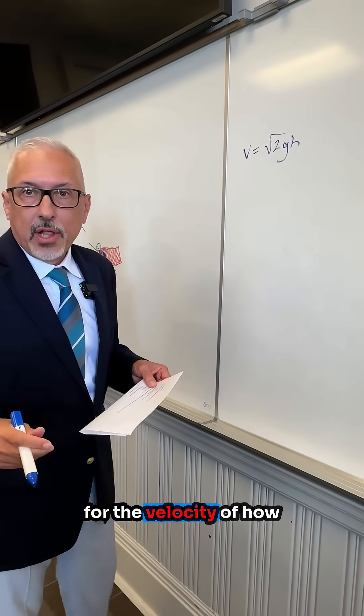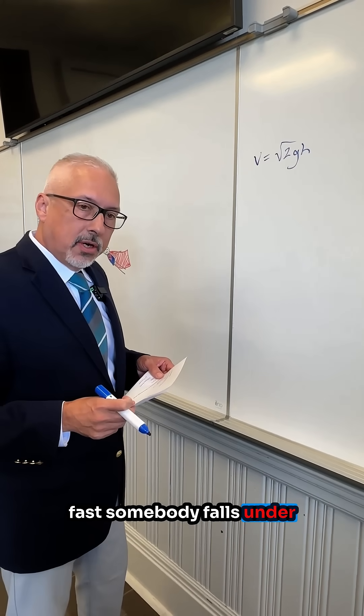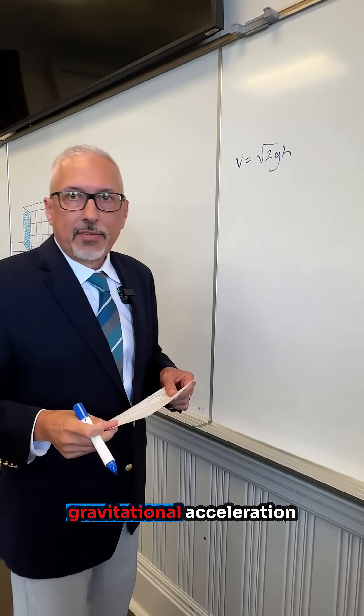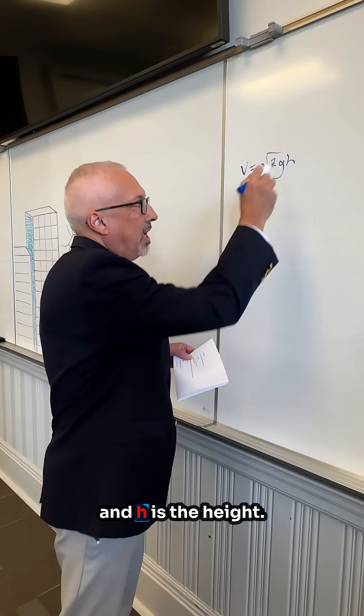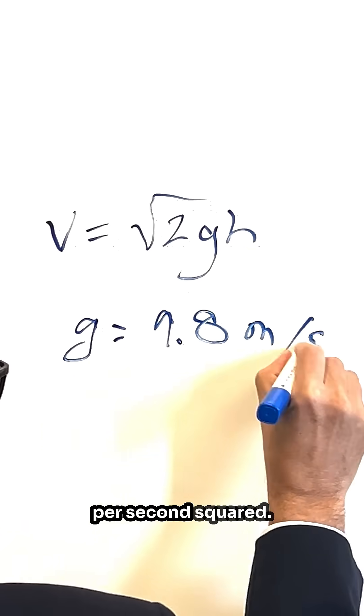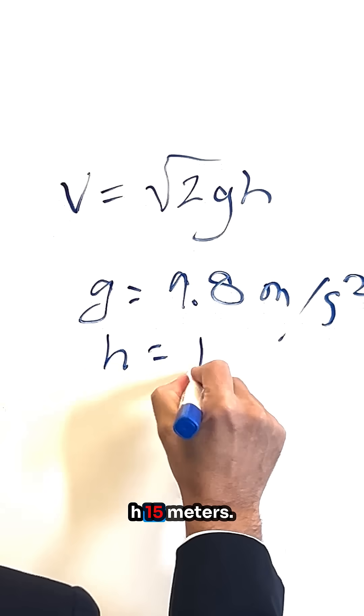Well, this is an equation for the velocity of how fast somebody falls under Earth's gravitational pull. V is velocity, G is the Earth's gravitational acceleration, meters per second squared, and H is the height. G is 9.8 meters per second squared. H is 15 meters.